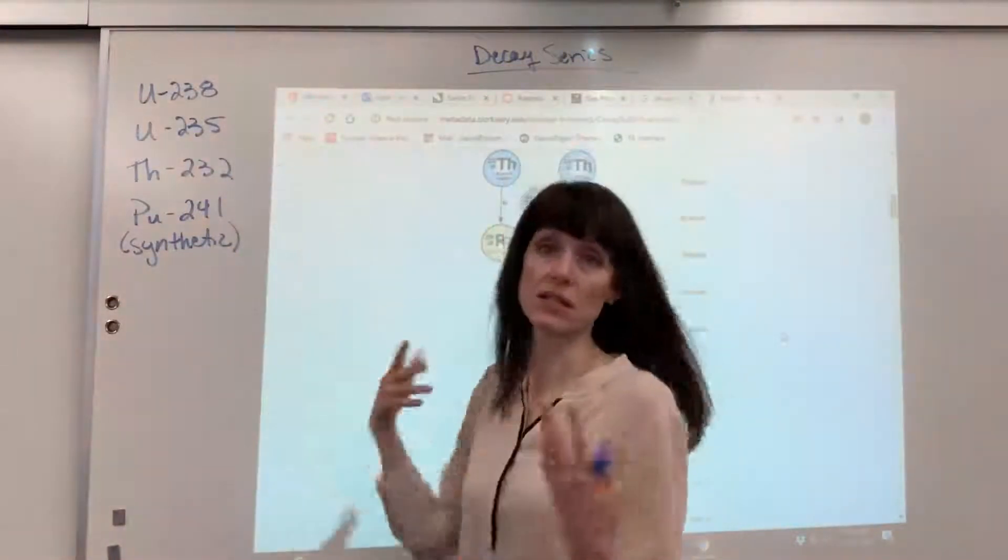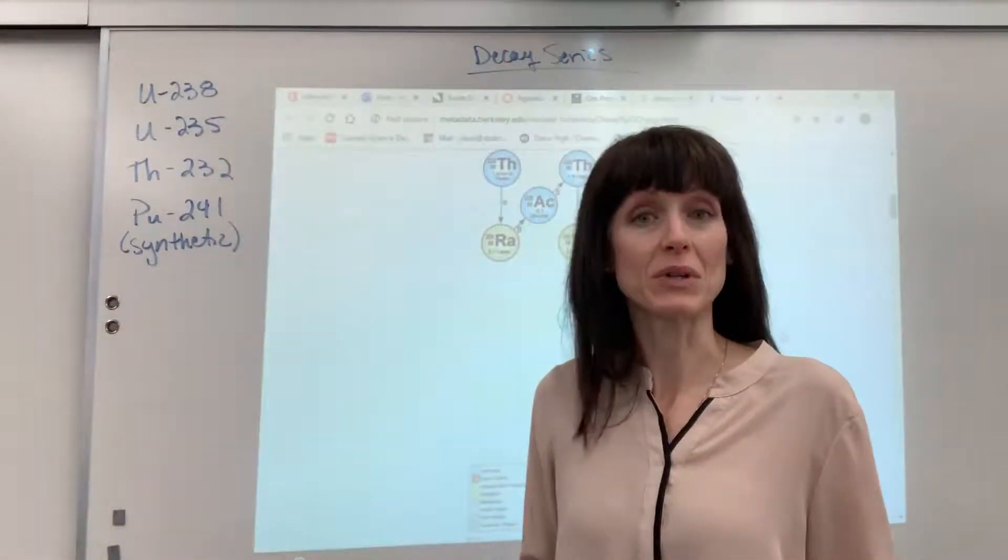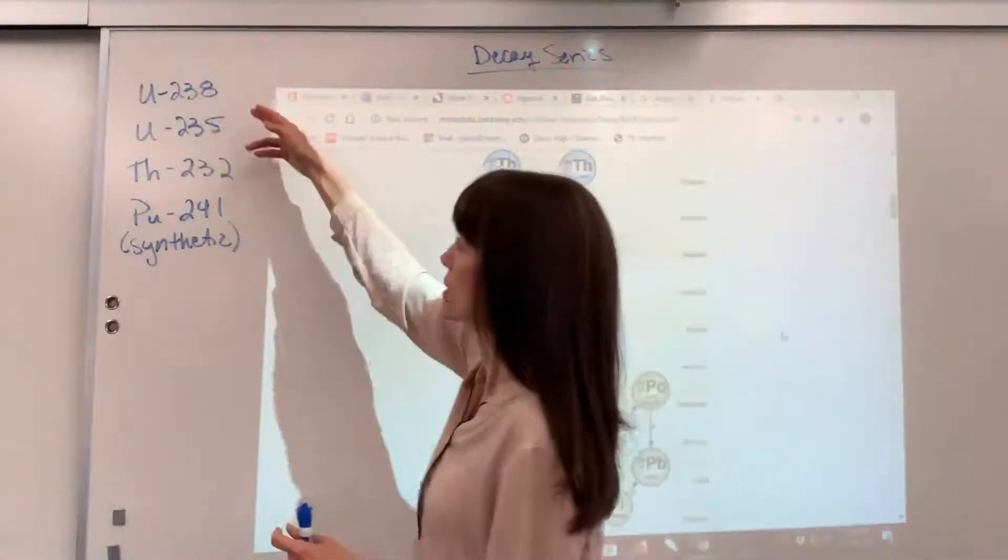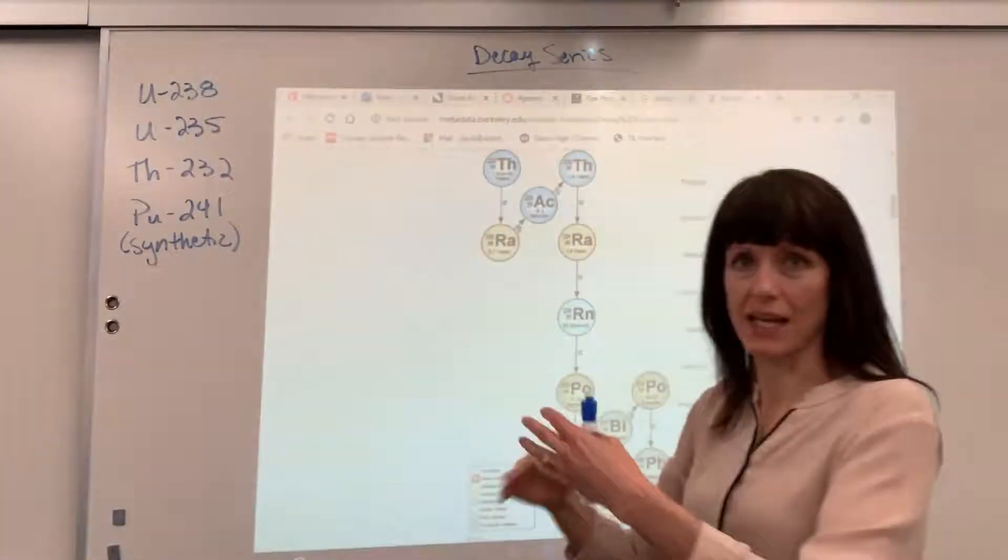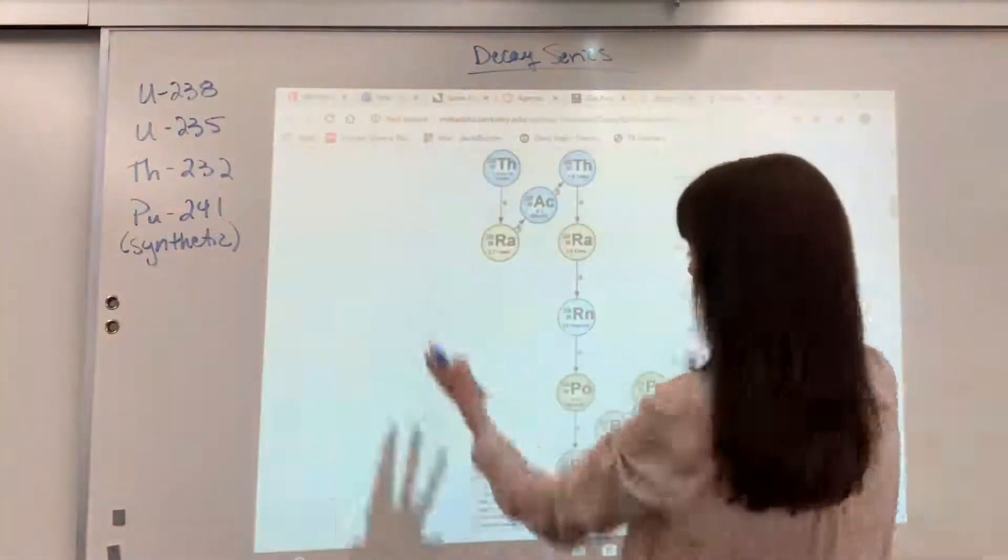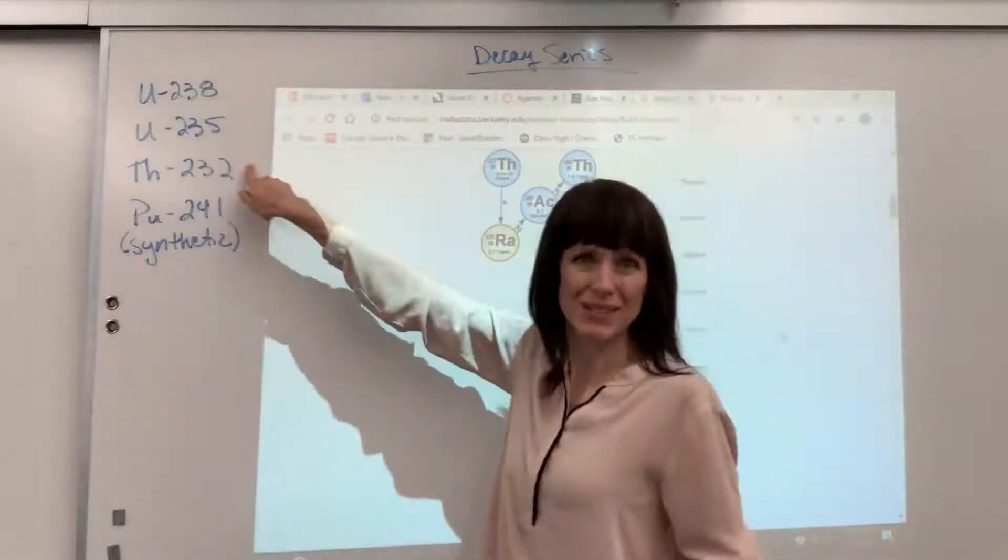Now these decay series, you can actually look up all four of those, and it's very predictable how these radioactive isotopes decay. Now this one that I chose right here is the thorium-232.